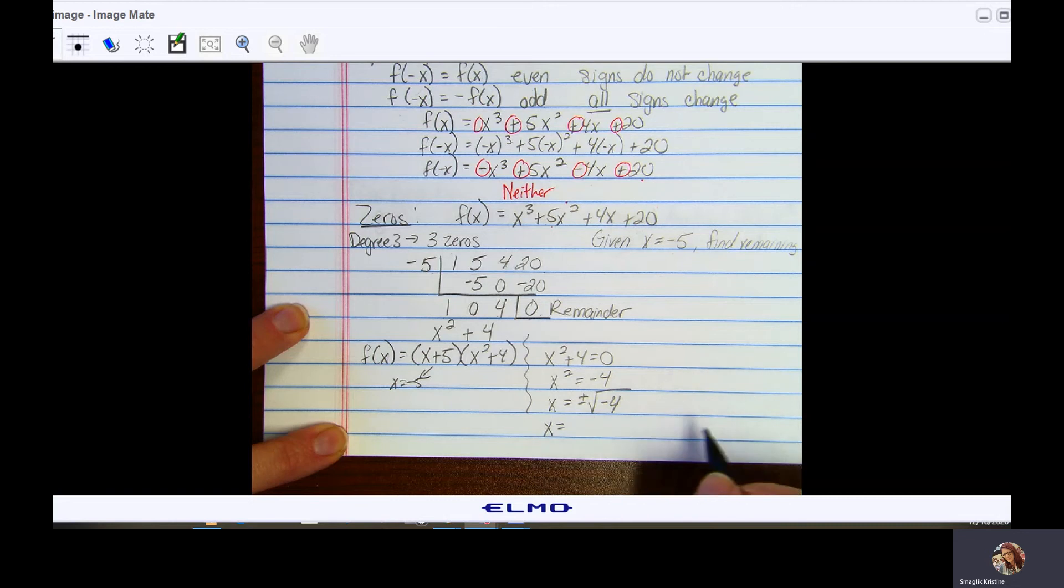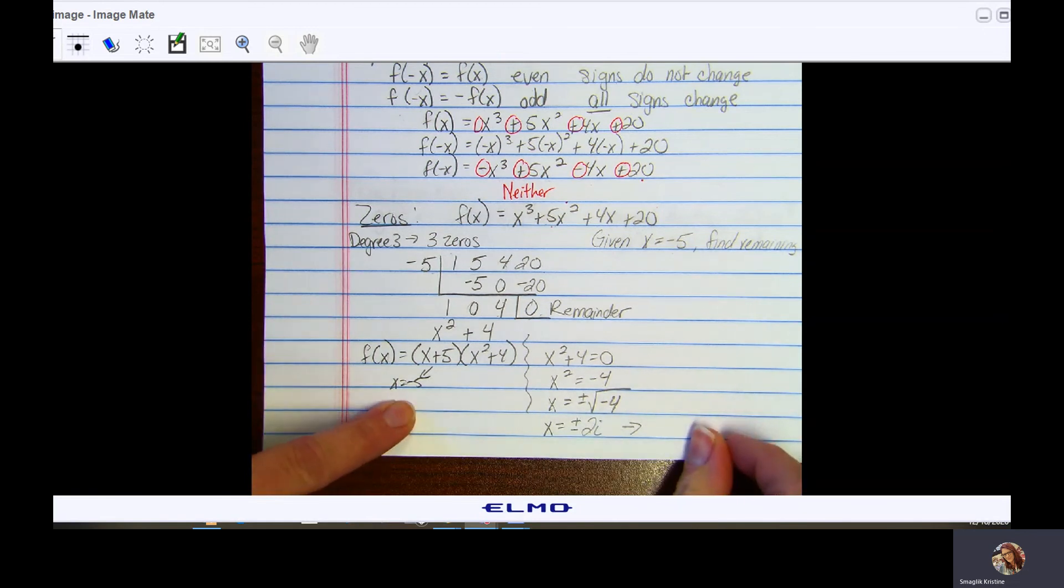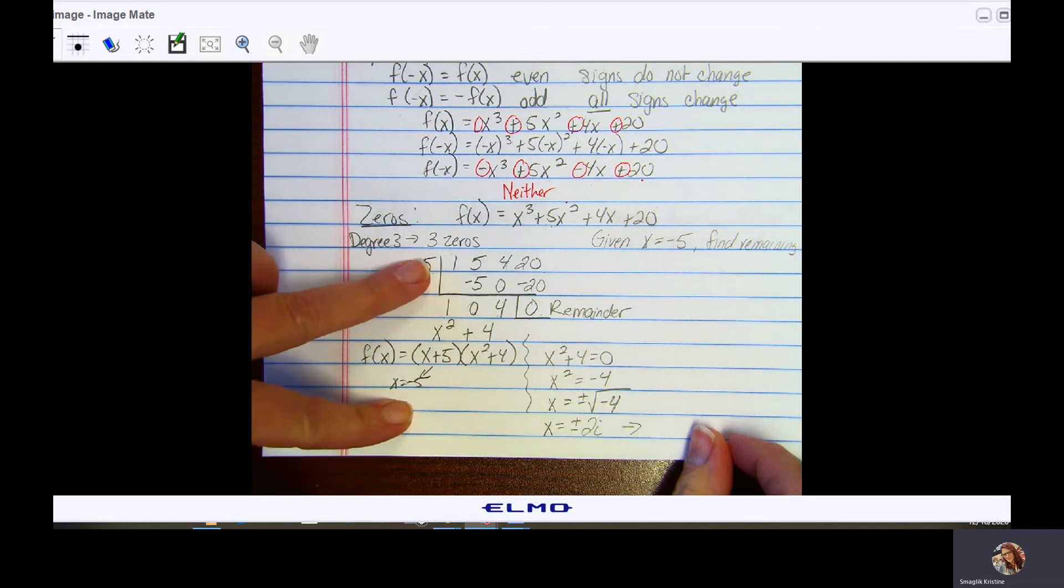That means I have x equals plus or minus - square root of 4 is 2, that negative comes out as an i. Here's my other two zeros. We had one zero at x equals negative 5. I'm expecting to see three zeros, so I get x equals 2i and x equals negative 2i.